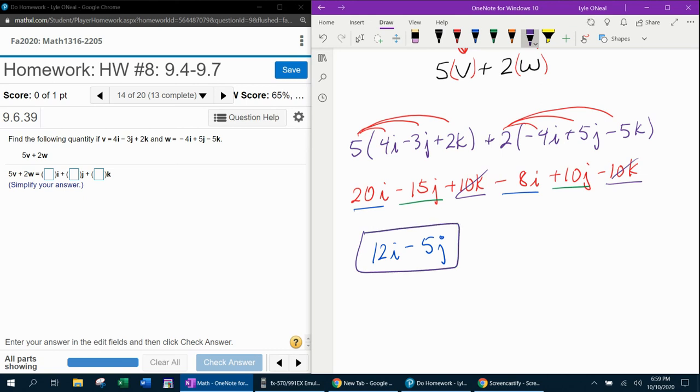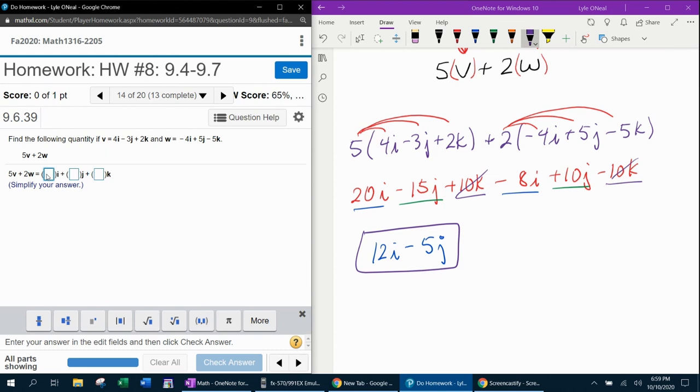And I've got my final answer. So to input that into MyLabMath, we've got 12I. Notice our J coefficient is negative and they put a plus, so we're going to have to actually enter negative 5J. And we do need to put in 0 because there are no Ks left.